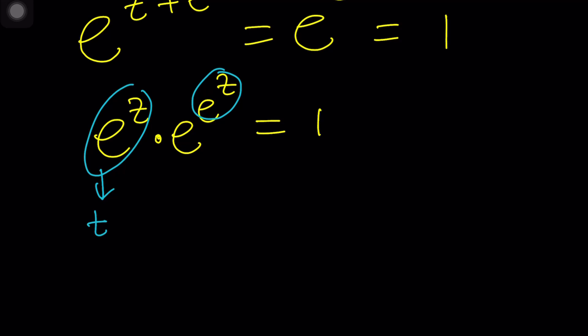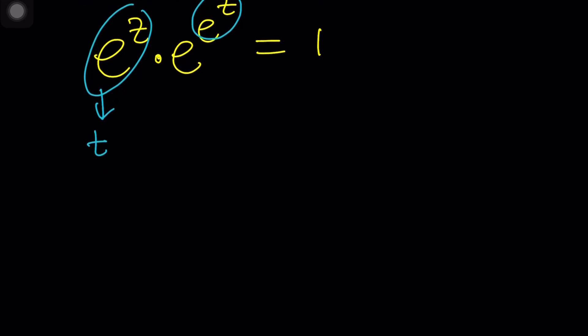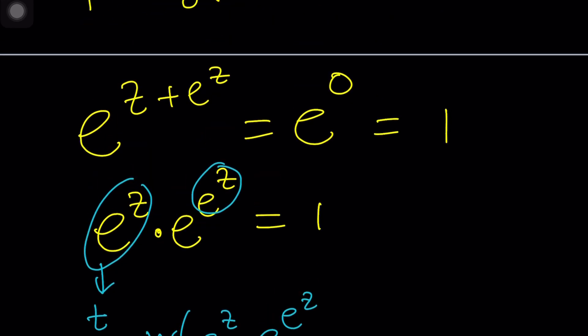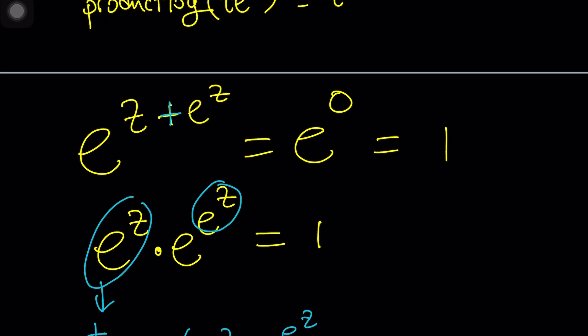What is next? W both sides. If you W E to the Z times E to the E to the Z. By the way, why did I write it as a product? Because the exponents are being added. Make sense?